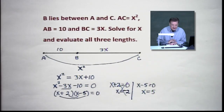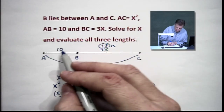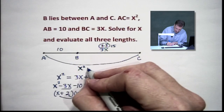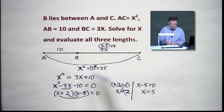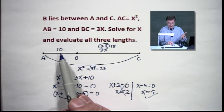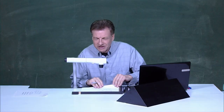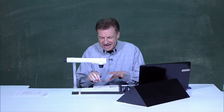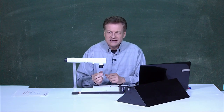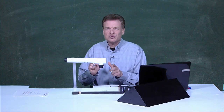Does x = 5 work? BC = 3 times 5 = 15. AB = 10. AC = 5 squared = 25. And indeed, 10 plus 15 equals 25 — it checks out. So all three lengths are: AB = 10, BC = 15, and AC = 25. This is the segment addition postulate — the two small segments add together to give the big one. Sometimes it's also called the definition of betweenness, depending on the textbook.